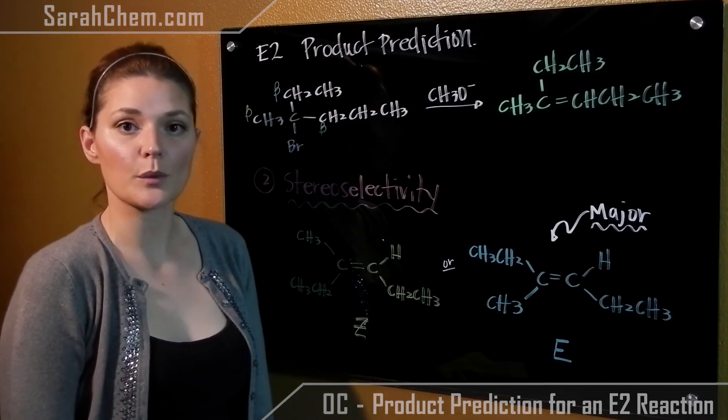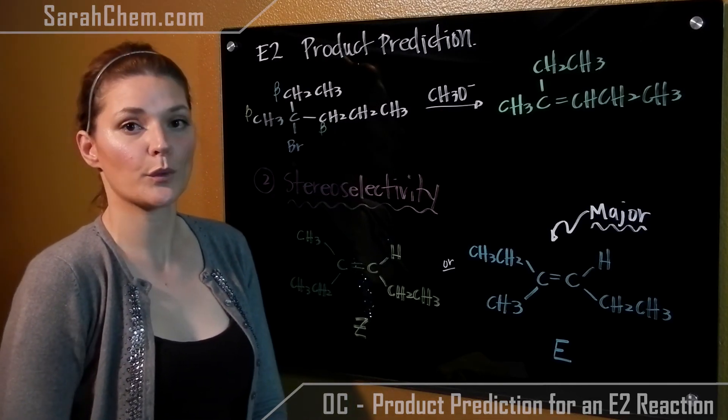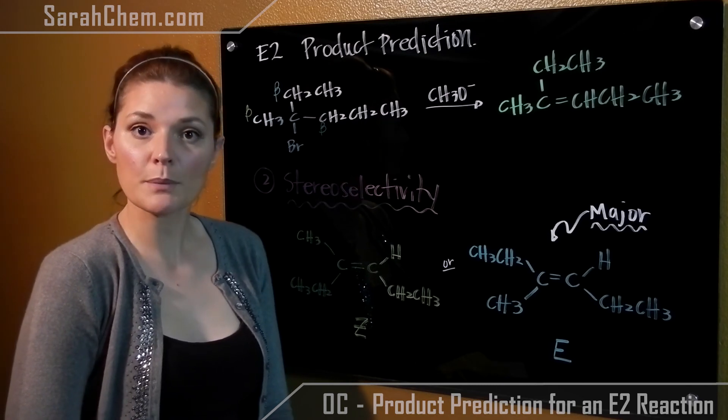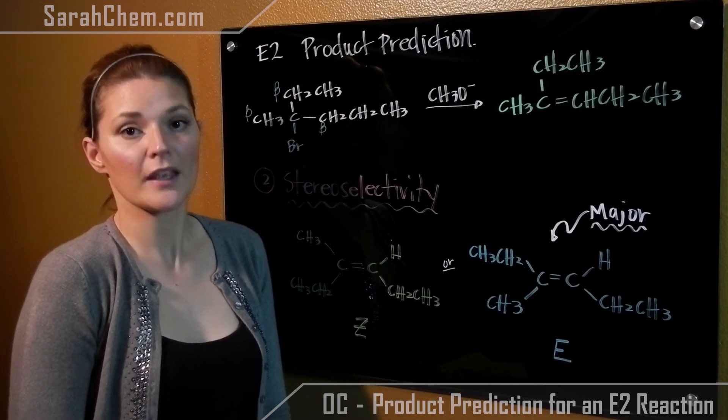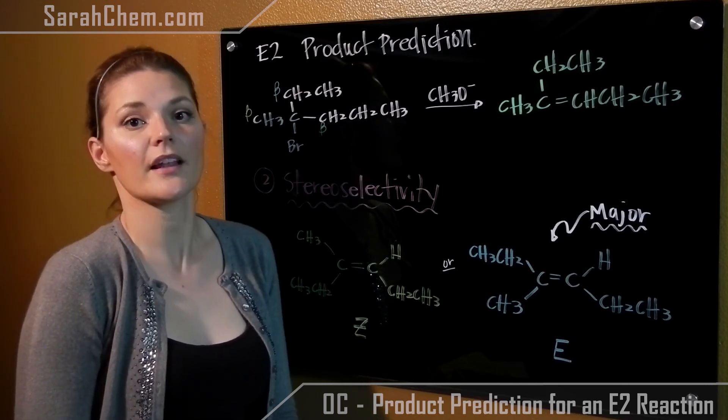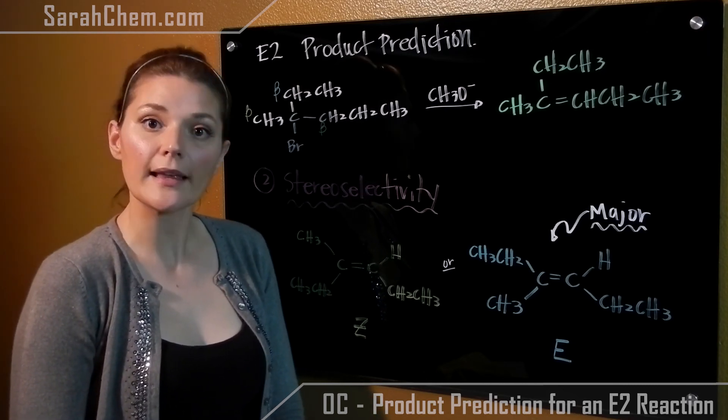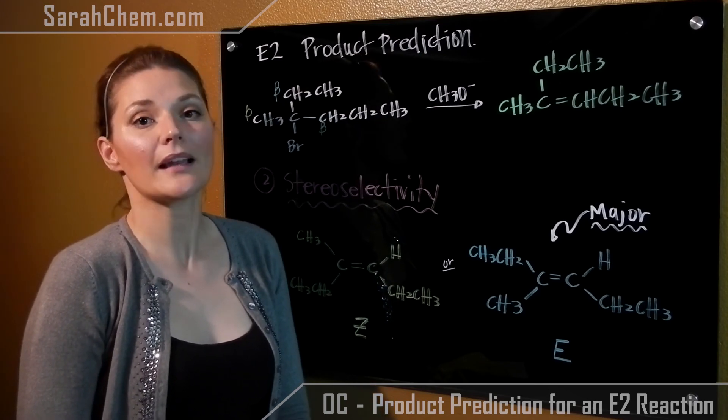So whenever you're predicting product for these reactions, first take a look at the regioselectivity. If you have potential to form an E or a Z isomer, you then need to look at the stereoselectivity. If you have a beta carbon that has two hydrogens, both E and Z will form, but E is what will dominate.